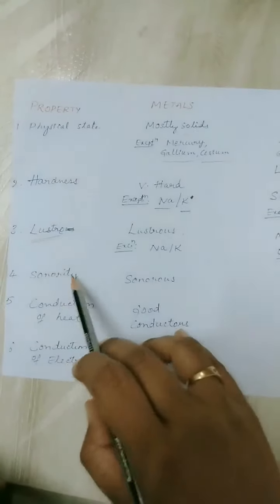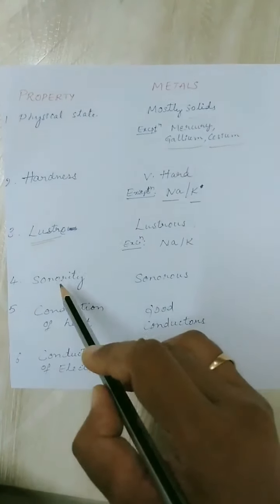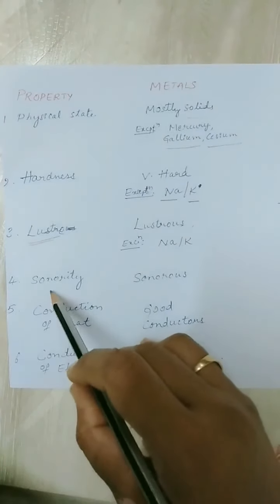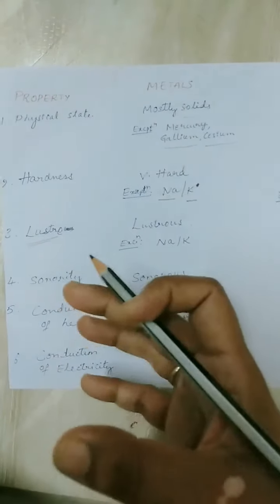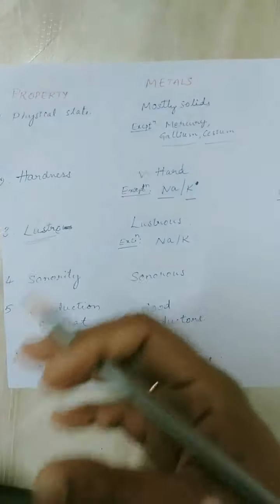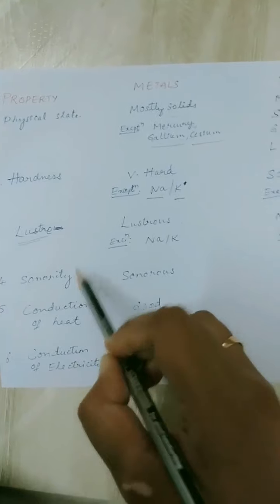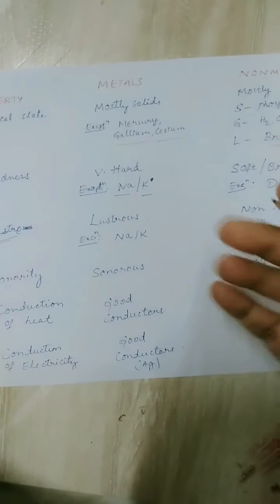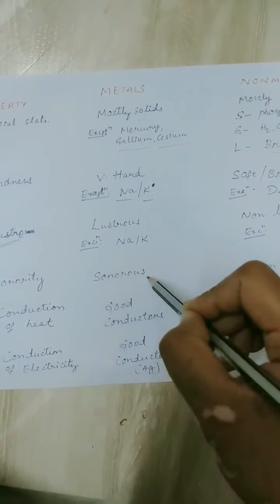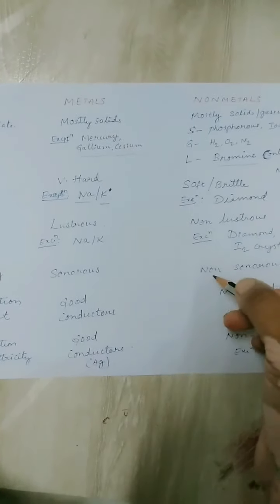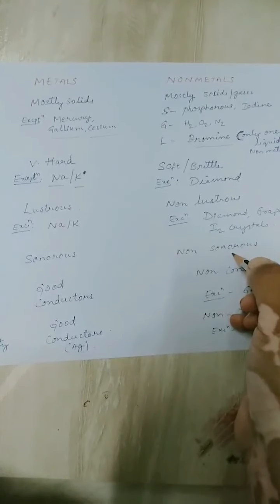Coming to sonority — what do you mean by sonority? It is the property of producing a ringing sound when substances are banged or hit. Metals are very sonorous in nature — when you drop a metal plate it produces a lot of sound. Coming to non-metals, they are non-sonorous and do not produce ringing sounds.